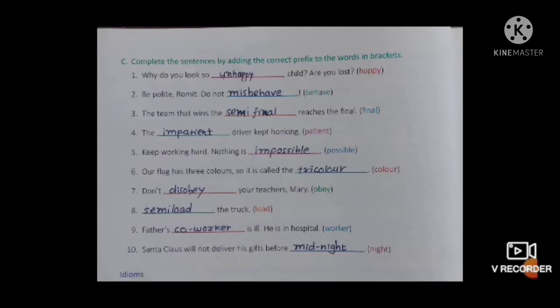First one: 'Why do you look so _____, child? Are you lost?' Here 'happy' is given in brackets, so we write 'unhappy.' It means 'naakhush ho' - are you lost, kuch tumhara kho gaya hai? So here we put the prefix 'un' - unhappy.